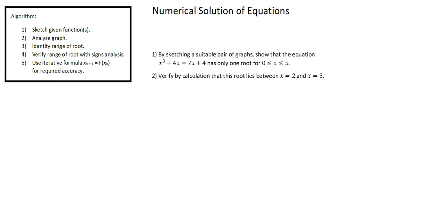Our requirements read: 1. By sketching a suitable pair of graphs, show that the equation x cubed plus 4x equals 7x plus 4 has only one root for 0 is less than or equal to x is less than or equal to 5. 2. Verify by calculation that this root lies between x equals 2 and x equals 3.